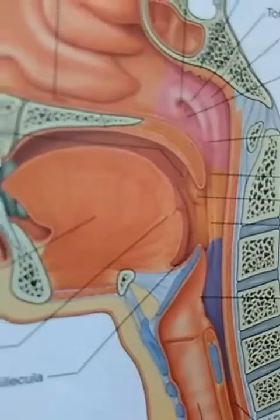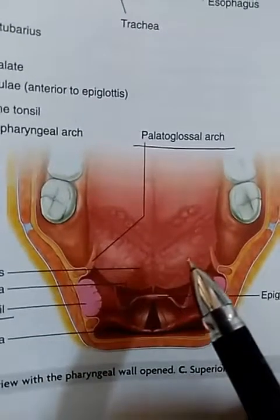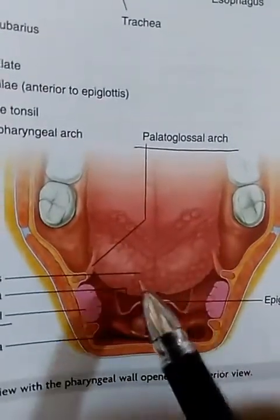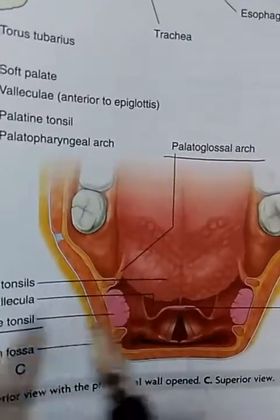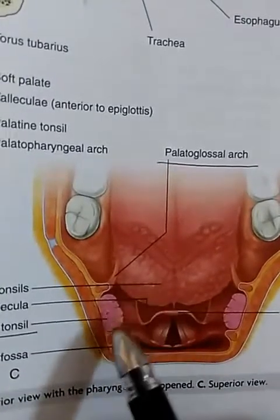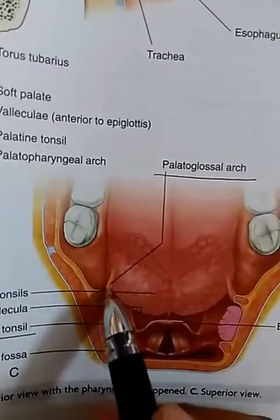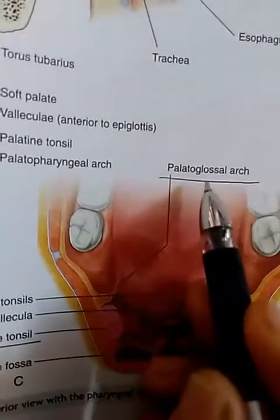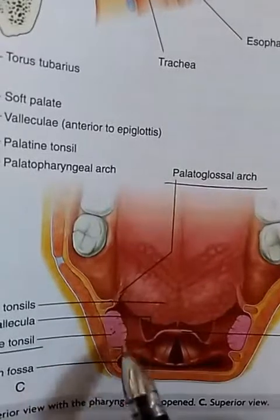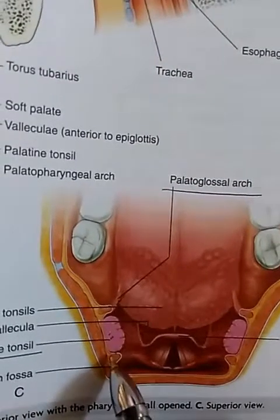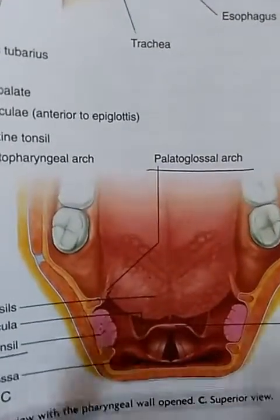For a better view of the palatine and lingual tonsils: the posterior one-third of the tongue bears the lingual tonsils. On the lateral wall are the palatine tonsils, with the palatoglossal arch anterior to them and the palatopharyngeal arch behind. This image specifically illustrates the lingual tonsil and palatine tonsil.